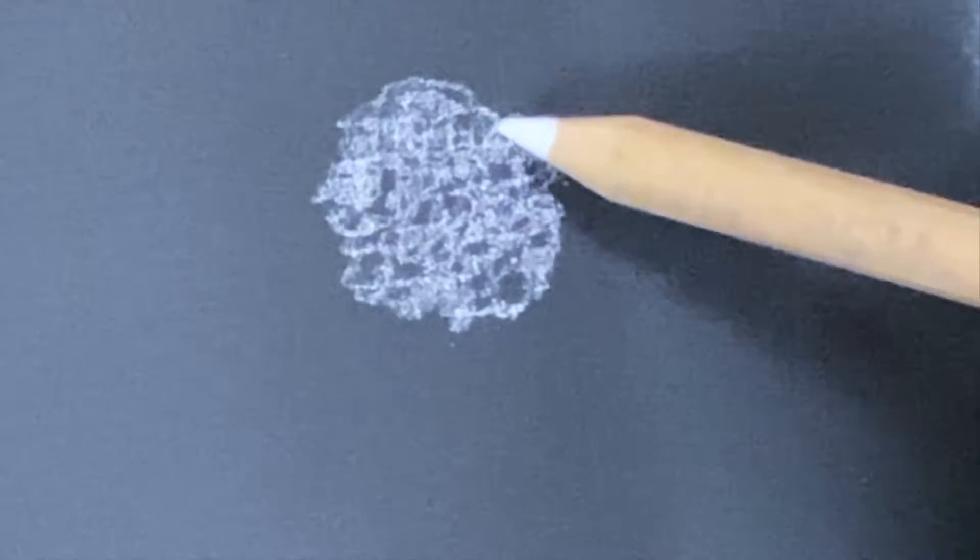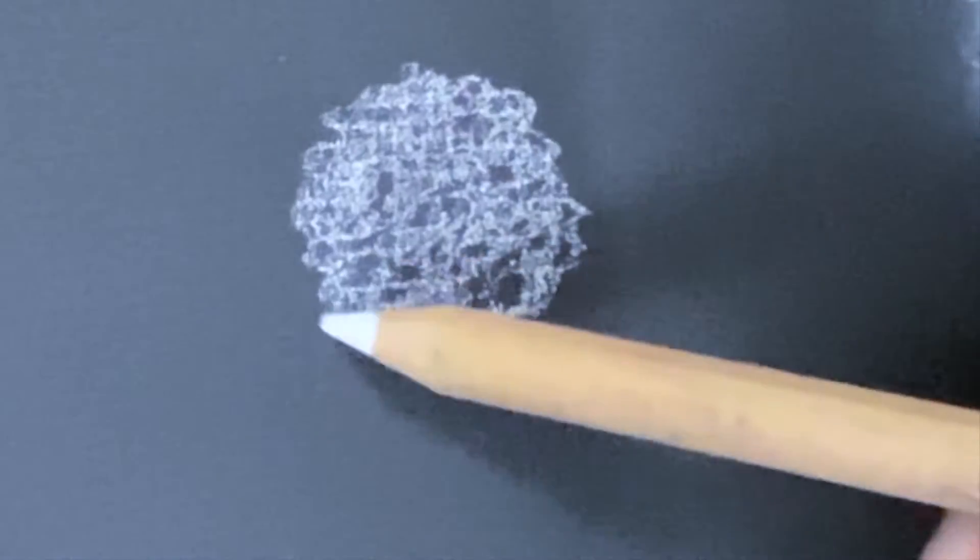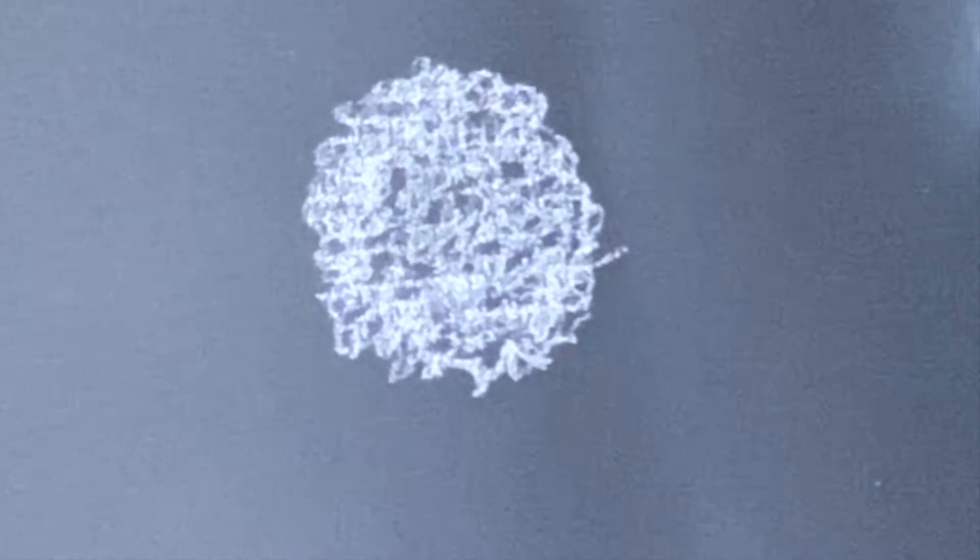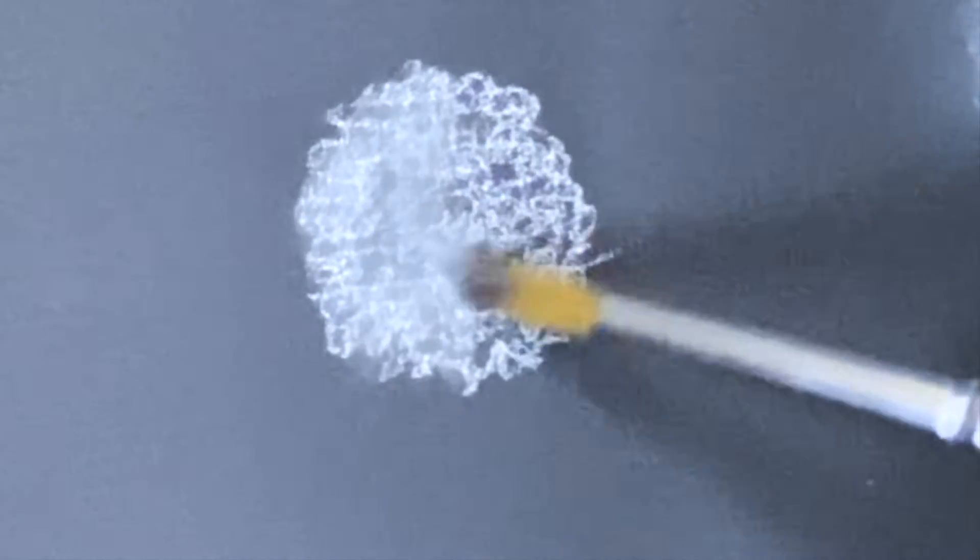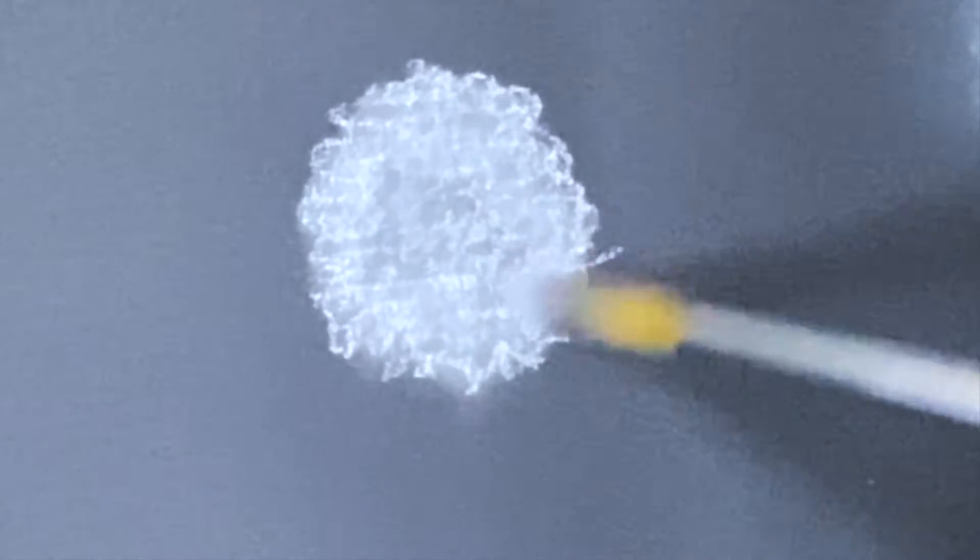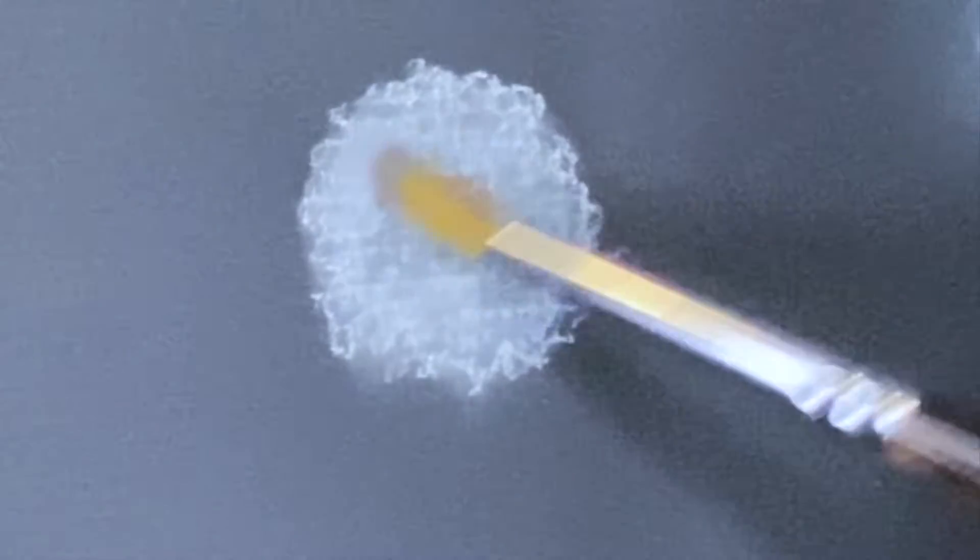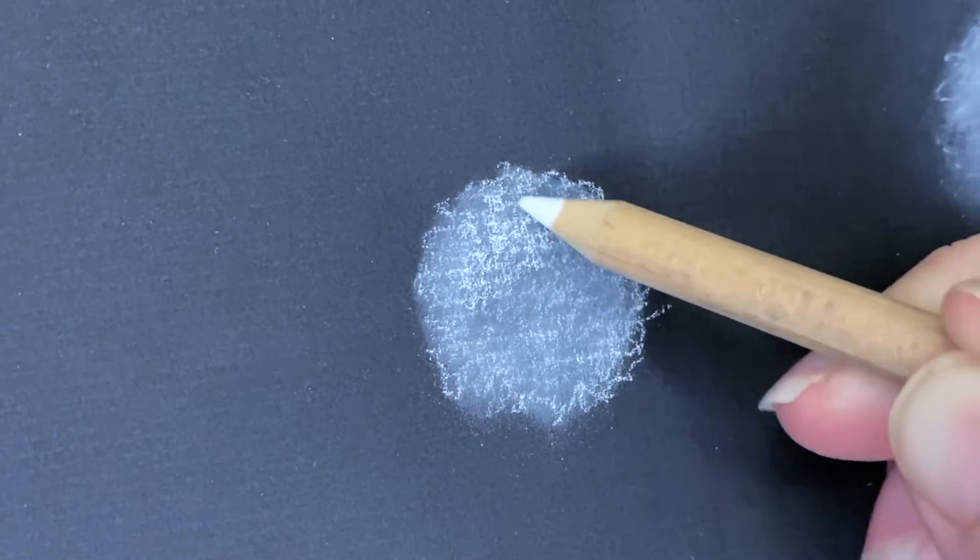And then I would take a paintbrush of some sort and kind of smooth out all the harshness of the pencil lines. I found it much easier to blend when I used this technique. I would repeat this process over and over a few times until I built up the texture that I was looking for.